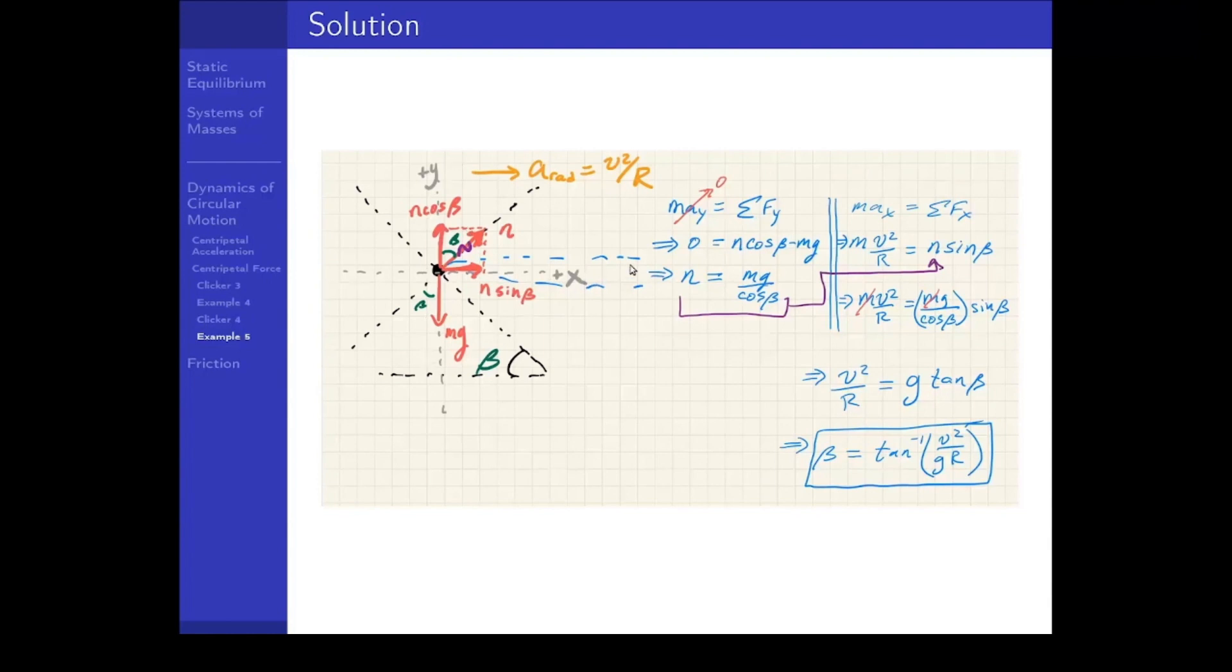Then we draw our coordinate system with the positive x direction being in the direction of acceleration. We are not using a slanted coordinate system here. And then we resolve the normal force into two components. To do that, we need to figure out what angle that normal force makes with either the x or the y axis. So we need to do a little geometry. This is the angle beta, which is the same as this angle, which is the same as that angle. So n cosine beta will be the vertical component since beta is measured from the y axis. And sine beta will be the horizontal component.